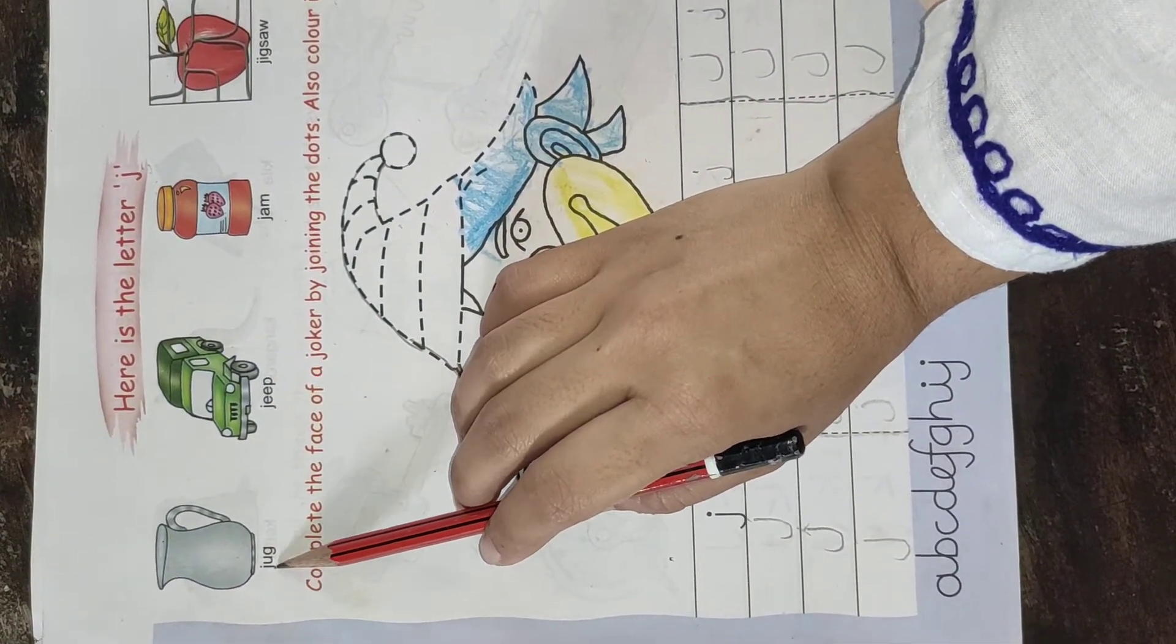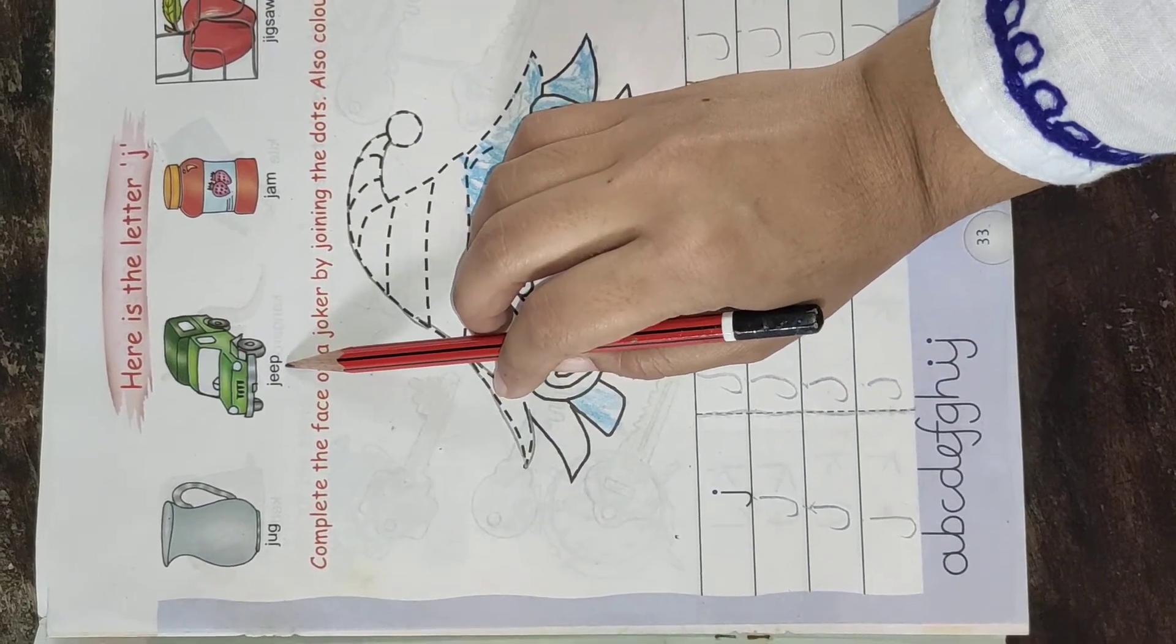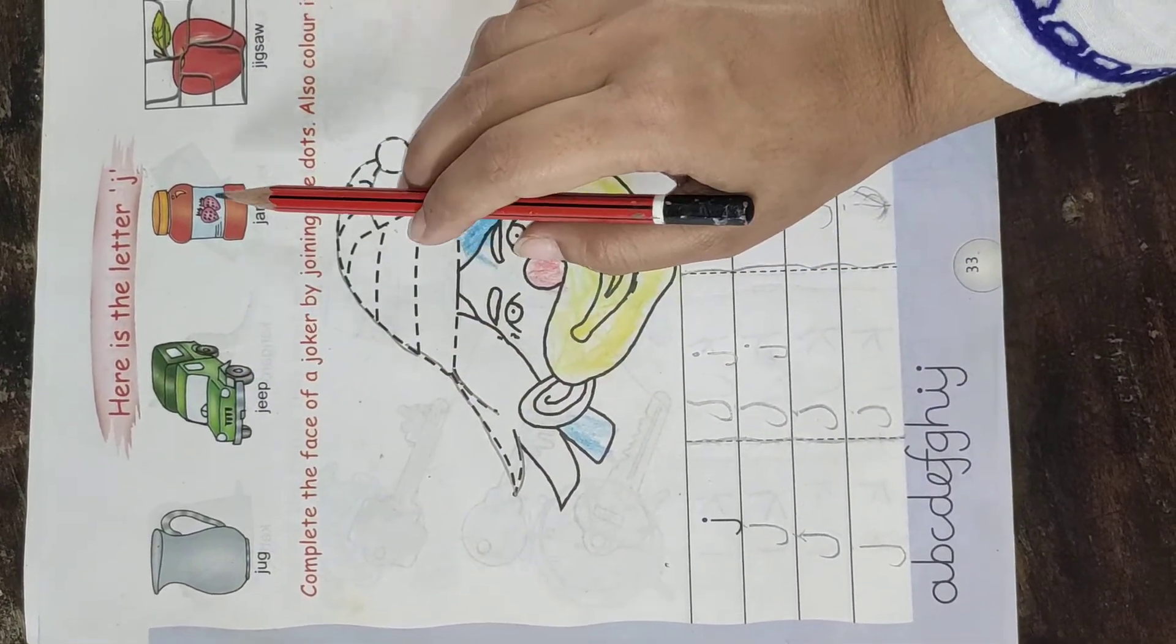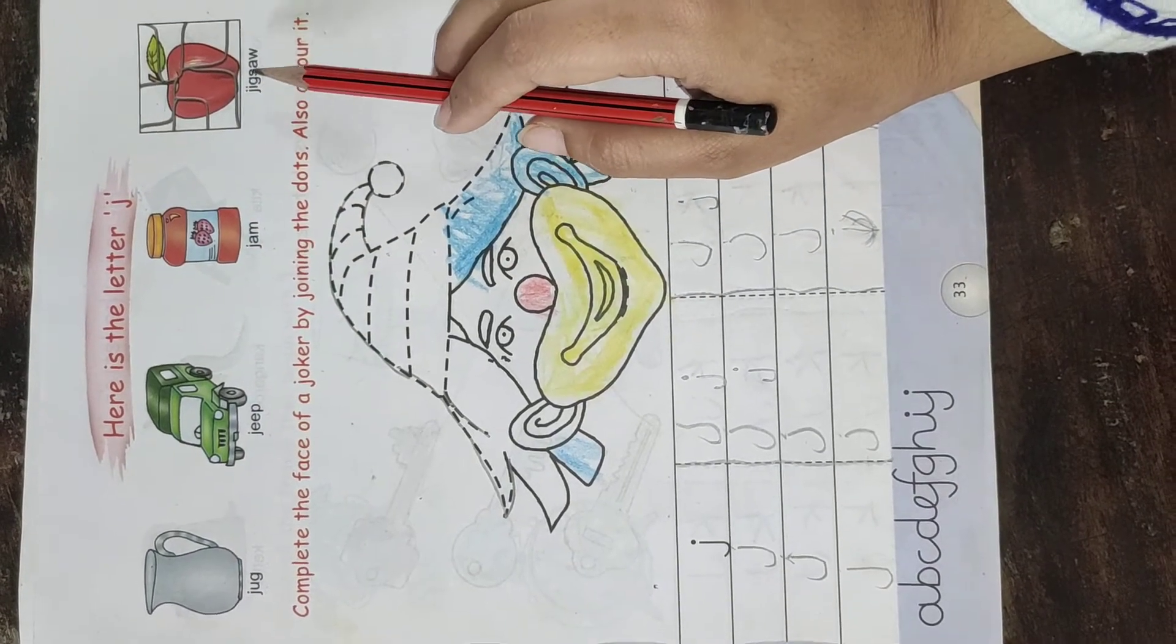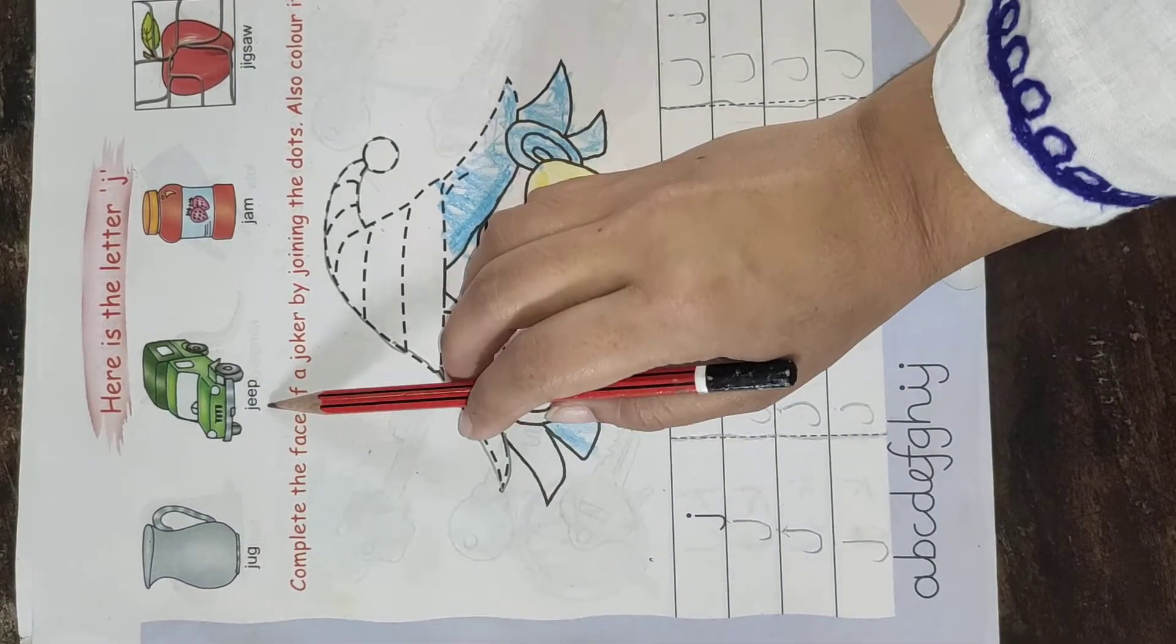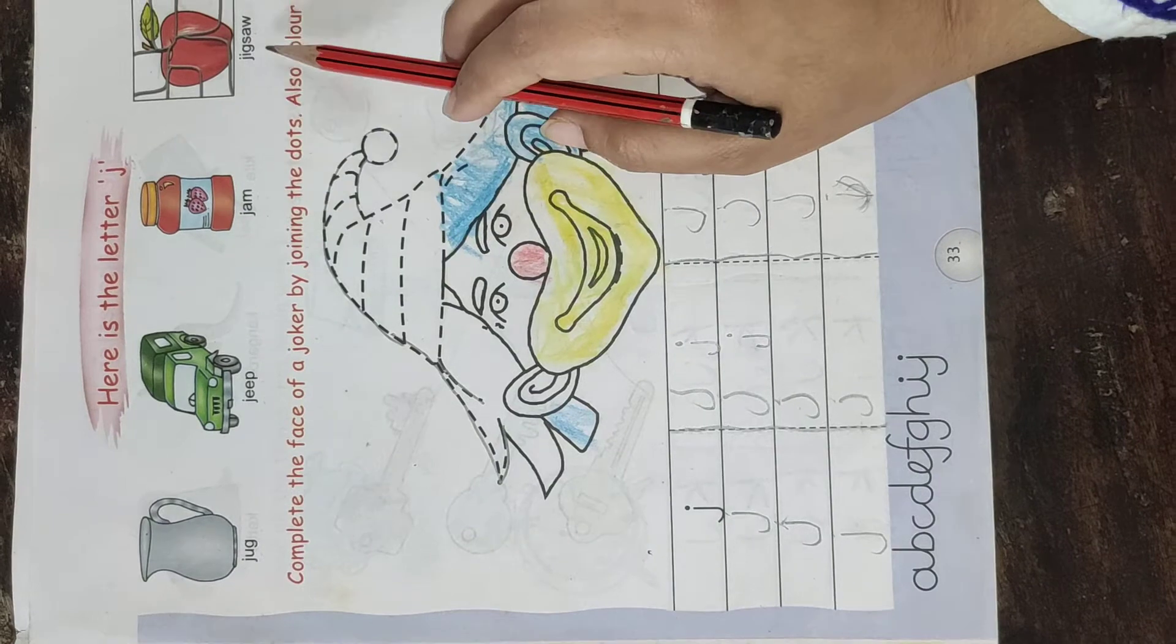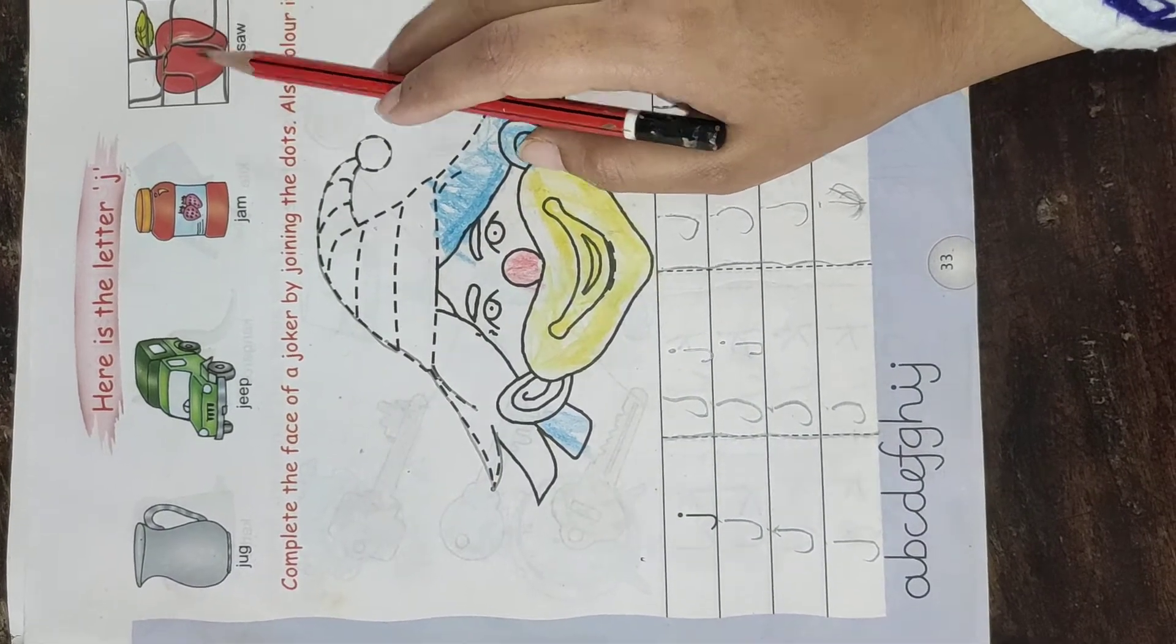What is this children? J for jug, jeep, jam, jigsaw. Again read: jug, jeep, jam, jigsaw.